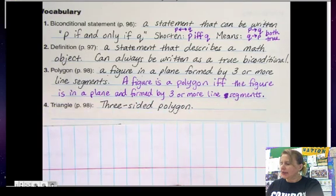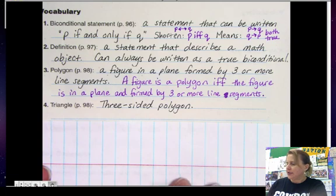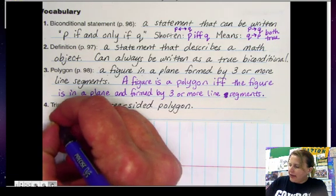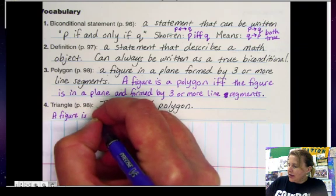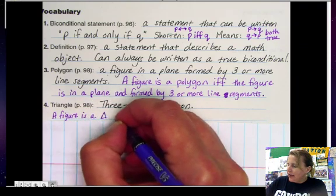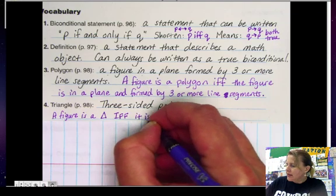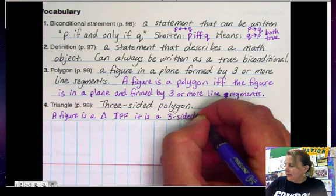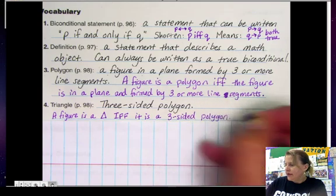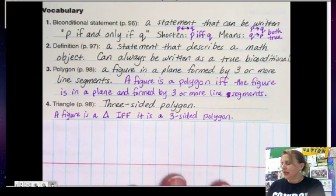The next one is: triangle is a three-sided polygon. If I were to write this as a biconditional, I would say a figure is a triangle if and only if it is a three-sided polygon. So I rewrote the definition as a biconditional statement.